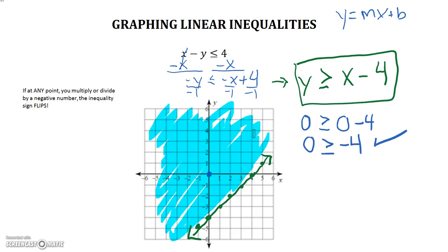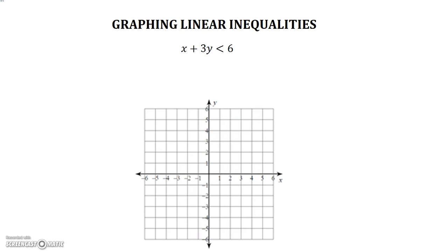Let's try another one. We have x plus 3y is less than 6. Now again, this is not in our slope-intercept form, y equals mx plus b. So we need to manipulate this inequality in order to get into that form. x plus 3y, we want the y to be alone. So let's go ahead and subtract that x away. We're left with 3y is less than negative x plus 6.